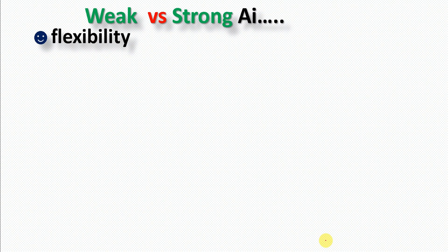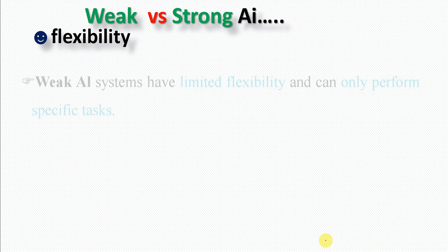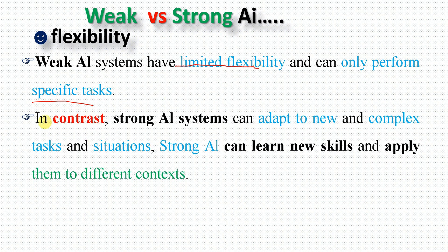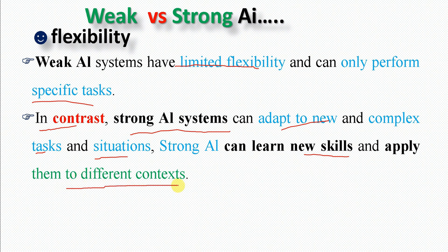The third and last difference between weak and strong AI is flexibility. Weak AI systems have limited flexibility and can only perform specific tasks. In contrast, strong AI can adapt to new and complex tasks and situations, learning new skills and applying them in different contexts.